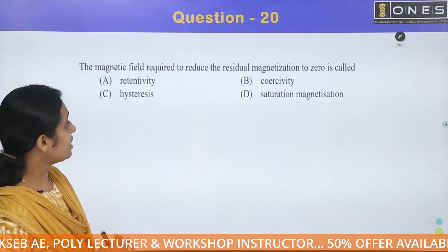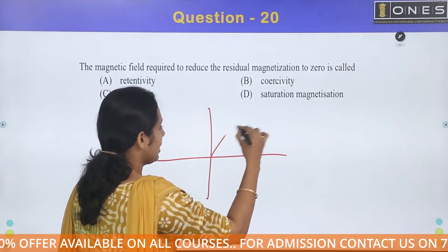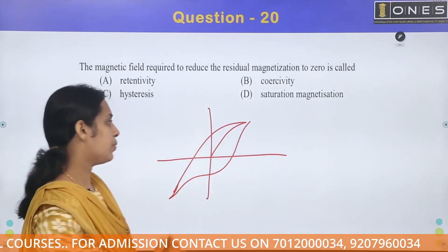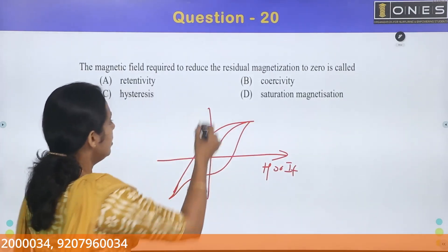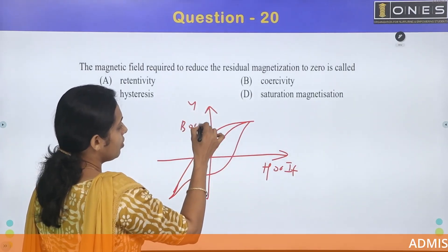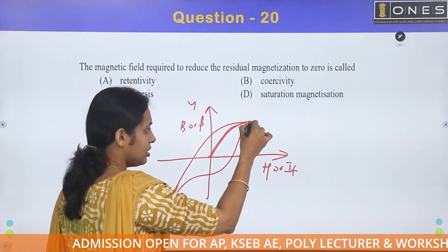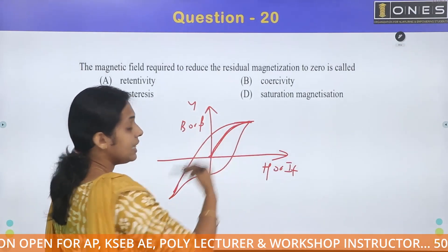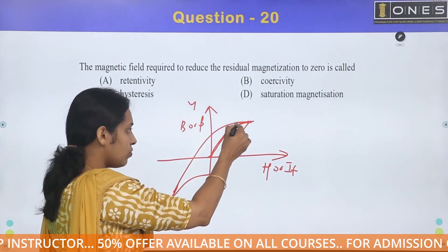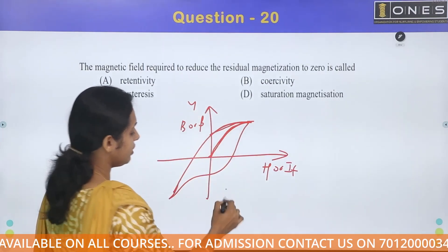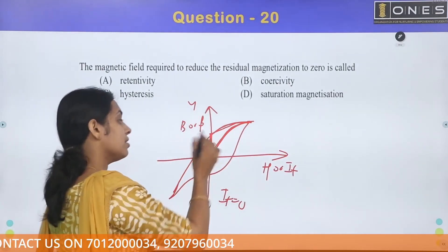Next question: The magnetic field required to reduce the residual magnetization to zero is called what? In the hysteresis loop, with H on the x-axis and B (or flux) on the y-axis, as field current increases, flux increases to a maximum. When field current decreases back to zero, flux does not return by the same path — some flux density remains. This remaining flux is called residual flux or residual magnetism.